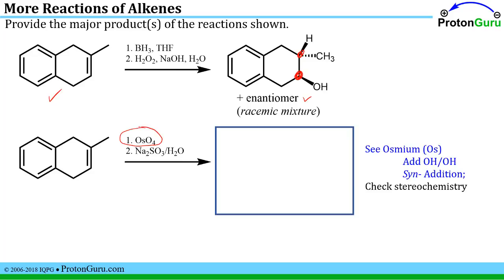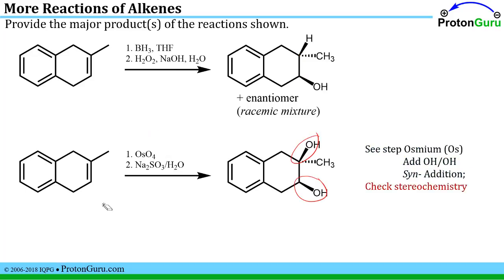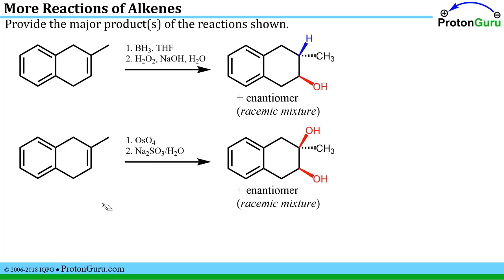In the second reaction, as soon as you see osmium, you know that you're going to add an OH to each of the two carbons with syn addition. We check for chiral centers—we've generated two—so we must produce the compound drawn as well as the enantiomer in equal quantities, giving us a racemic mixture.